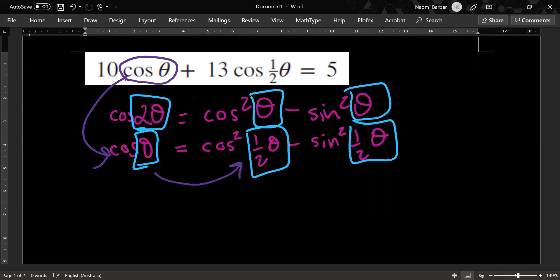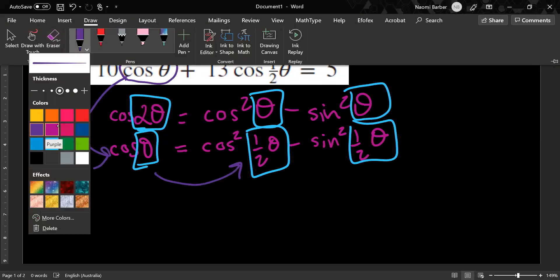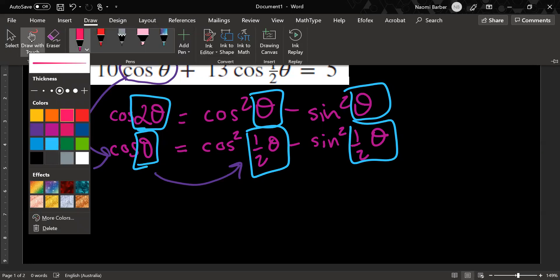So now what I'm going to do is I'm going to make cos squared half theta the subject. But before I do that, I'm going to get rid of this sine squared half theta and here's how I'm going to do it. I'm going to note, I'm going to use another identity. This might not come as a surprise to many of you, but it's just fun to show all of these things. We can note that sine squared something plus cos squared something equals one.